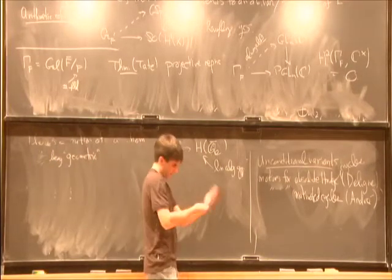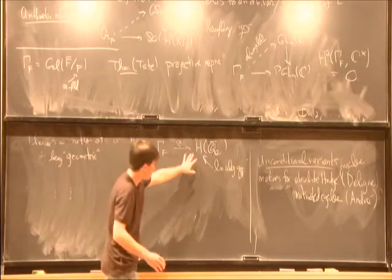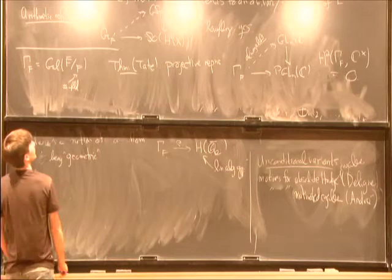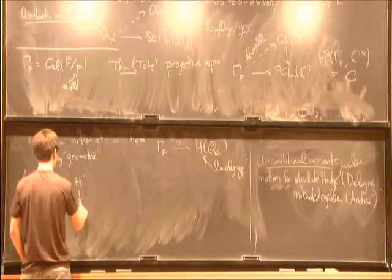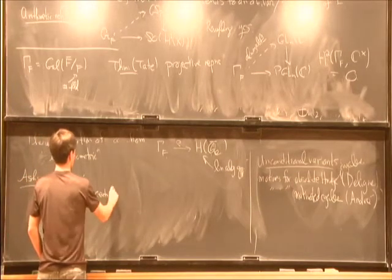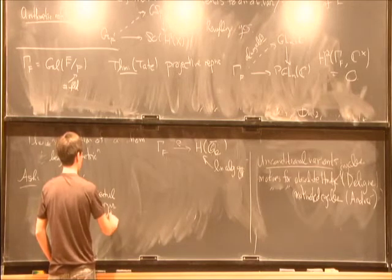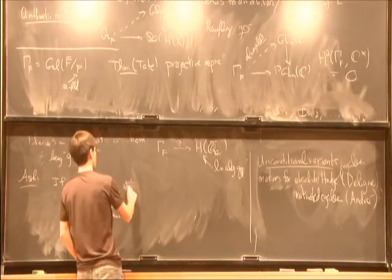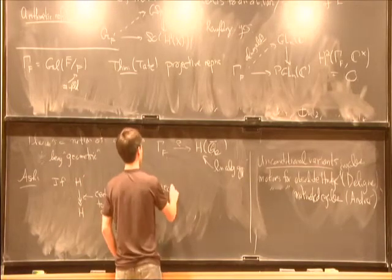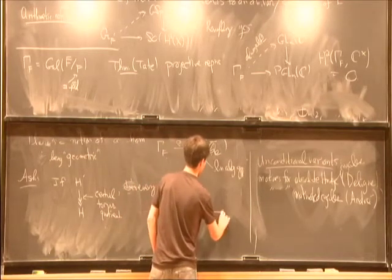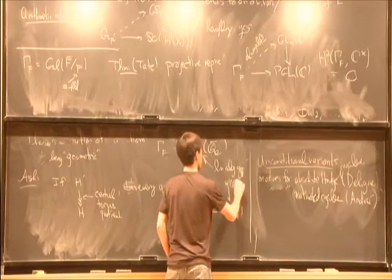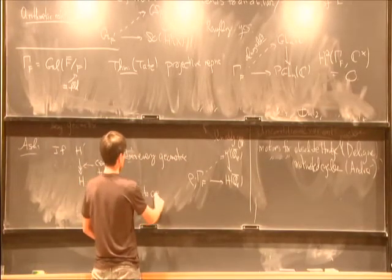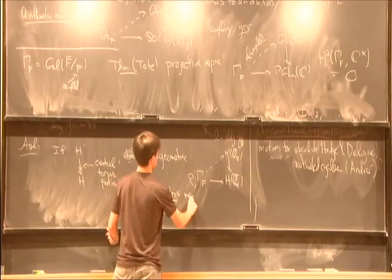The notion of a homomorphism ρ to be geometric, this is in the sense of Fontaine-Mazur. It doesn't actually say that it comes from geometry, it says it has the formal properties that we expect to characterize the things that do come from geometry. And so in parallel with Tate, you can ask if you have some quotient like this, where now the key thing here is that you're killing a central torus. This is a central torus quotient, something like GL_n to PGL_n or G-spin to SO. If you're in this setup, does every geometric ρ from Galois to H(Q_l-bar) lift?